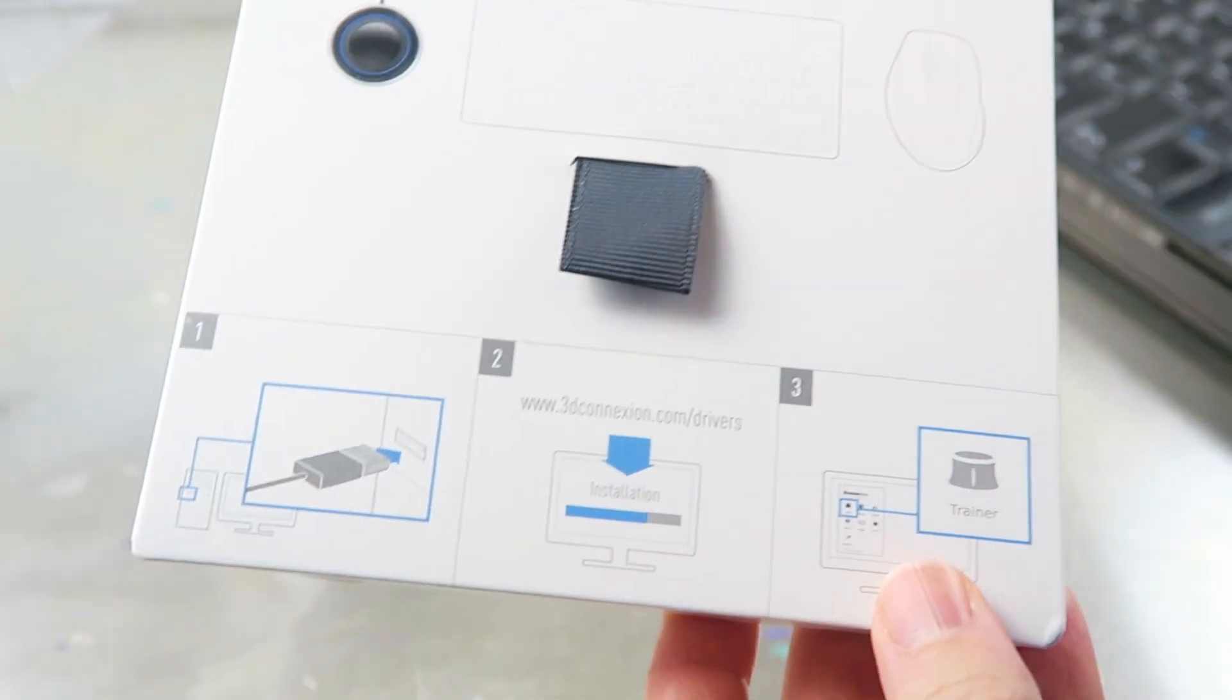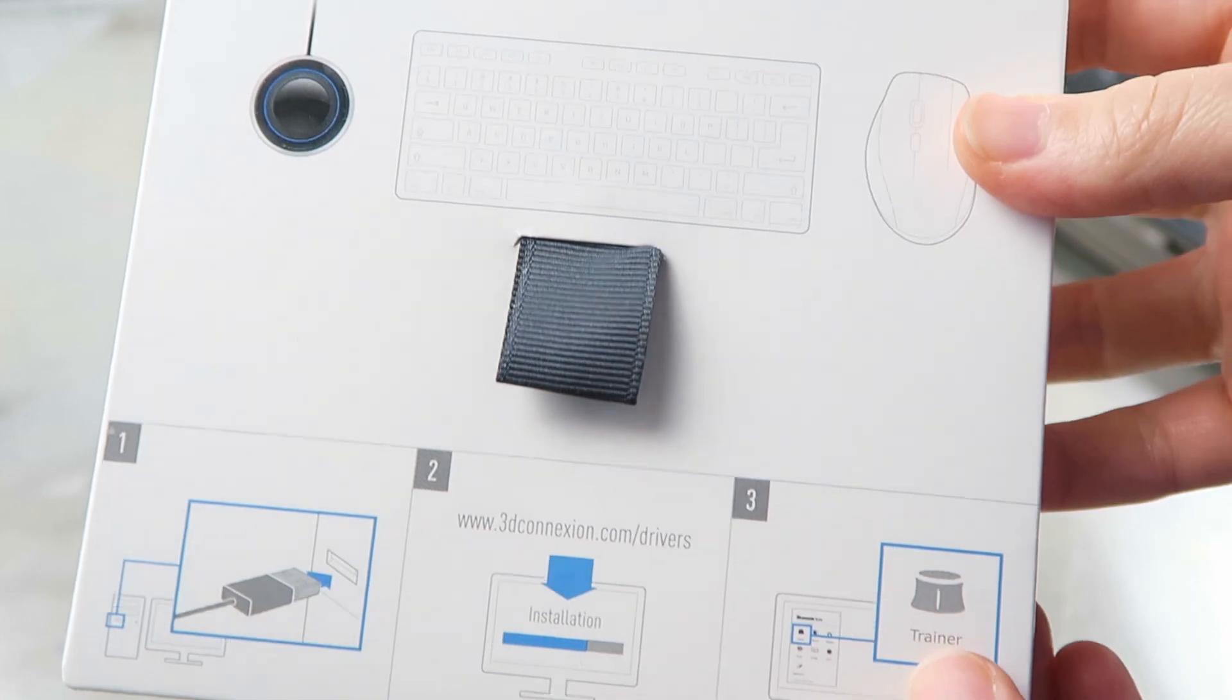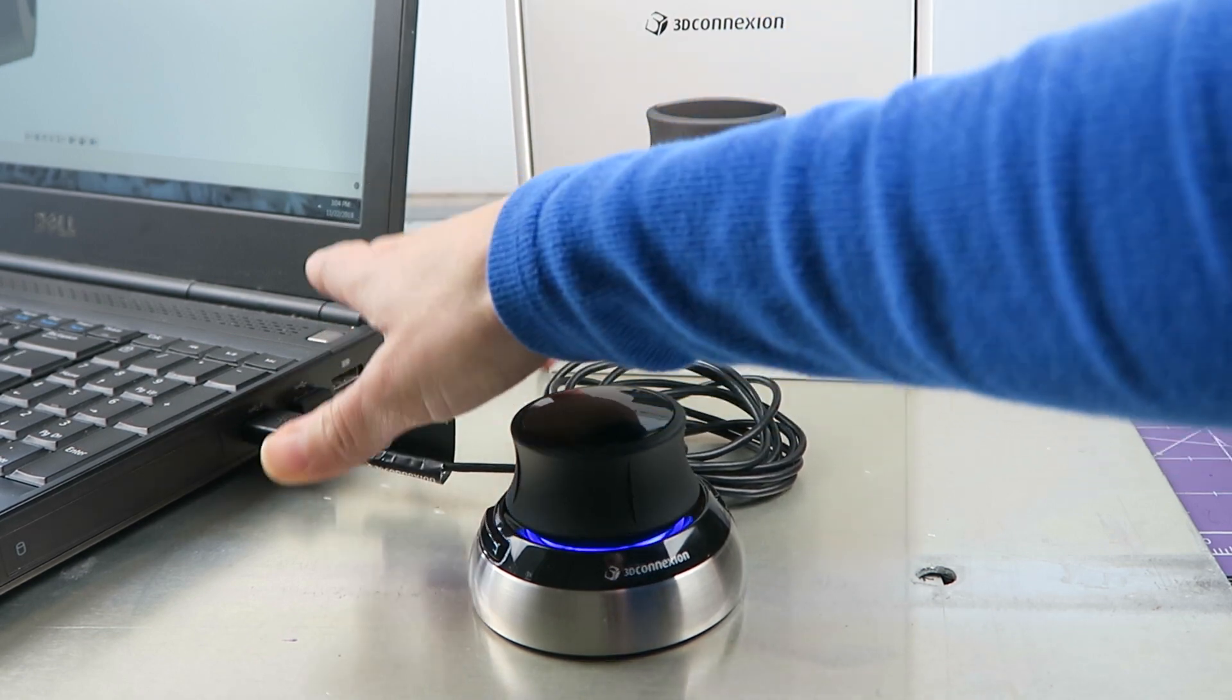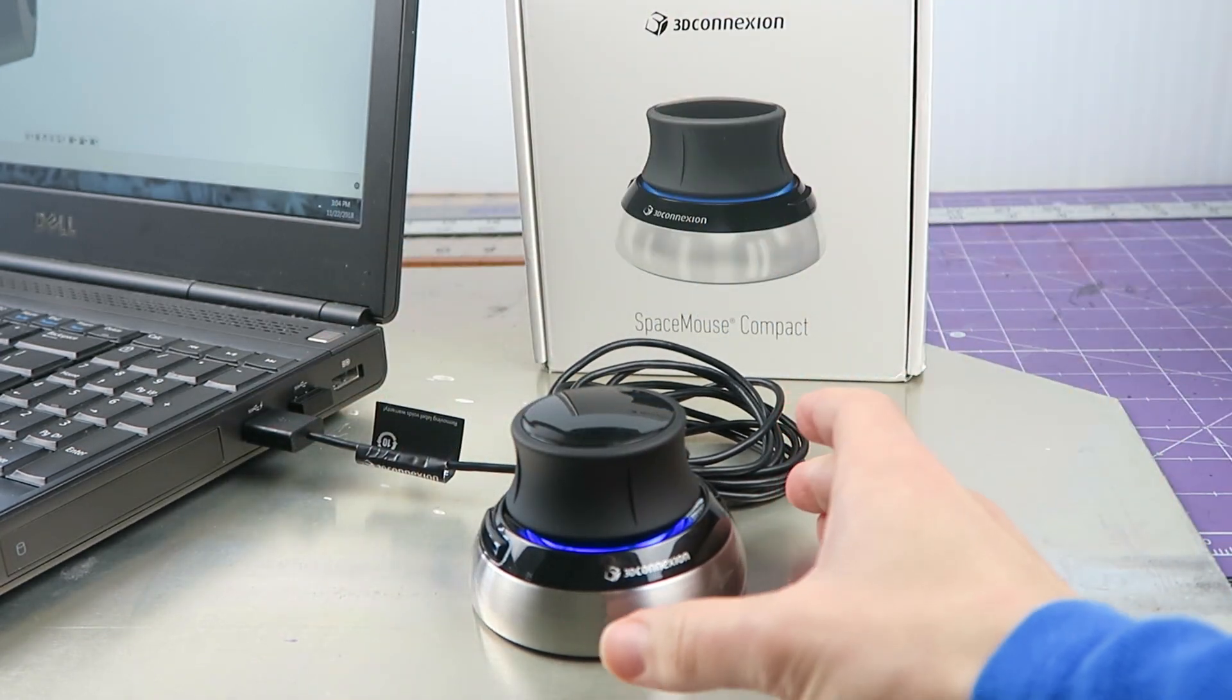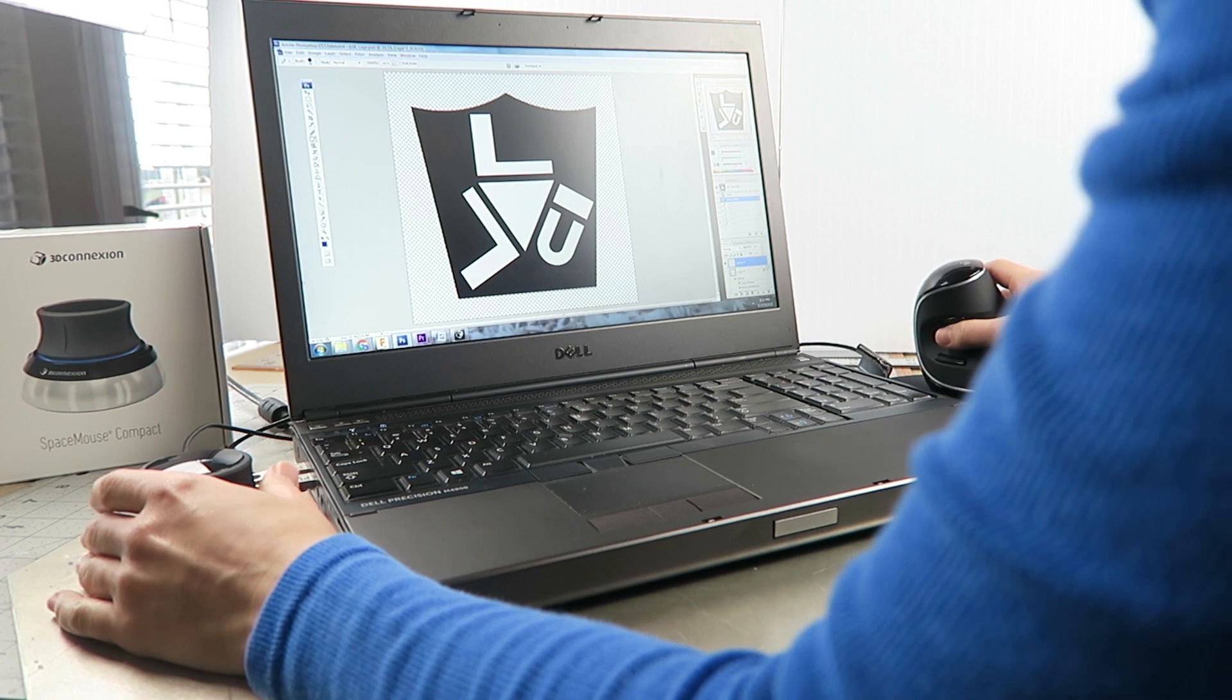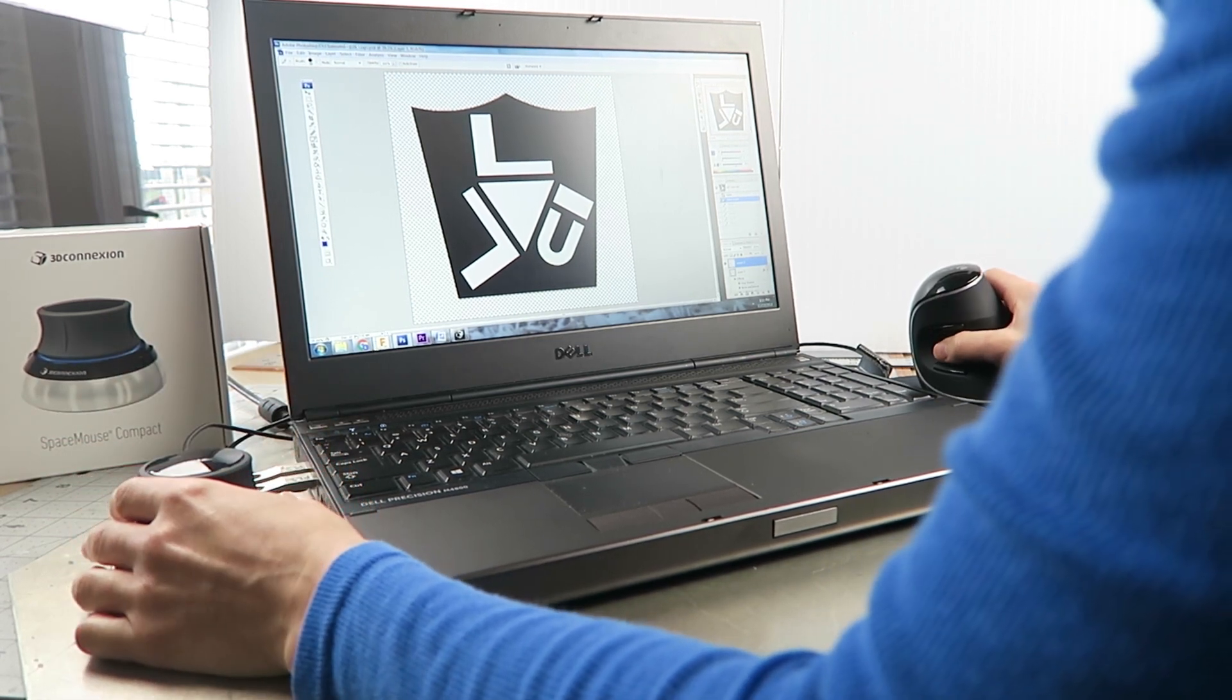Before plugging in the mouse, you do need to go to their website and download the drivers for this. And then there's also a training tool in there so you can get familiar with it before you jump right into your modeling program. And I've left the vertical mouse plugged in also because I'm going to be using those together now. So this is the setup that I'd be using. I've got my space mouse here for my left hand and then my standard mouse and my right. You can also swap it but I can't with this one because this is a strictly right-handed mouse.